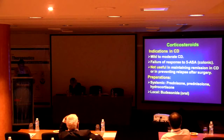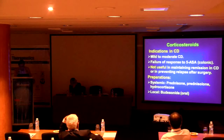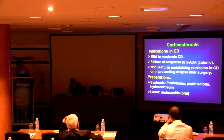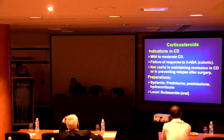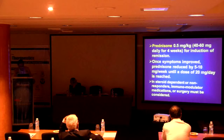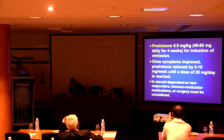What about corticosteroids? They are indicated in mild to moderate Crohn's disease or in cases of failure to respond to 5-ASA in colonic Crohn's. Prednisolone can be given in doses from 40 to 60 mg per day — about 0.5 mg per kilogram per day — continued for four weeks, then tapering begins after induction of remission.